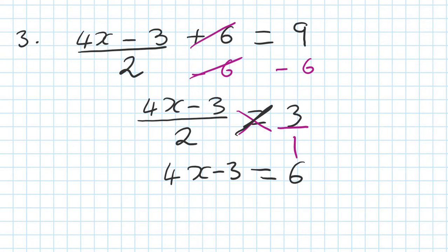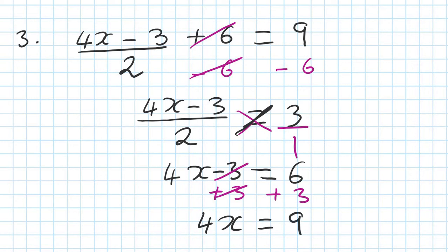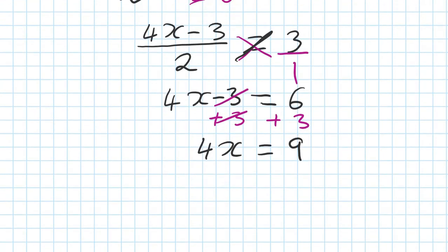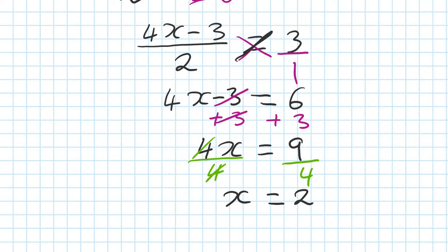Now back to two-step equations. Get rid of minus 3 by doing the opposite — plus 3 on this side. So you're left with 4x is equal to 9. Now dividing by 4: x is equal to 9 over 4. Using a calculator, 4 into 9 is 2 and a quarter — you can also write this as a decimal, 2.25.